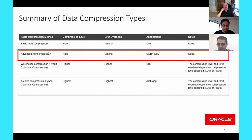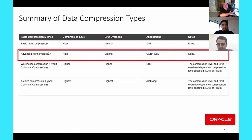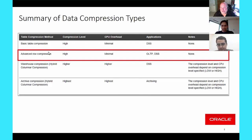On the screen you can see a summary from our documentation—a good chart of the data compression types. It points out basic table compression and advanced row compression: what they're good for and what type of applications. Basic table compression is really designed for DSS type applications, whereas advanced row compression or OLTP table compression is suited for either OLTP or DSS type applications.